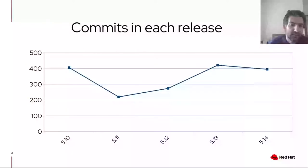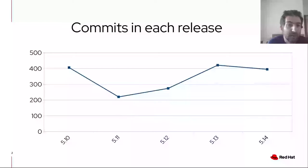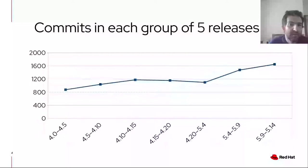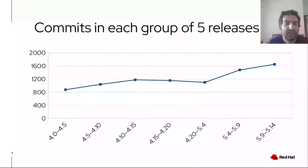1400 is actually a lot of commits for KVM, and you can see that we had about 400 commits in 3 out of 5 releases, which has happened pretty rarely in KVM in the past. This other graph plots the commits in each group of 5 releases, and you can see a substantial uptick in the number of commits starting around 5.4. This bodes well for the health of the KVM hypervisor.